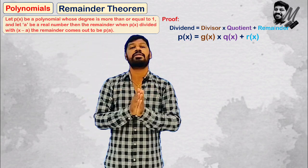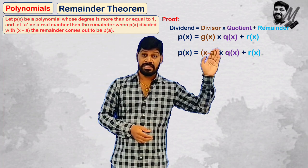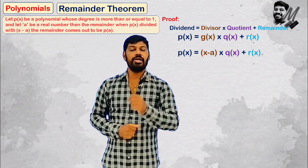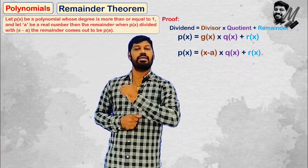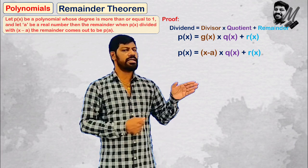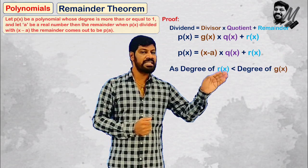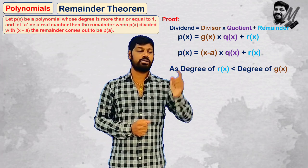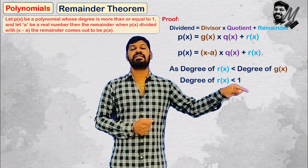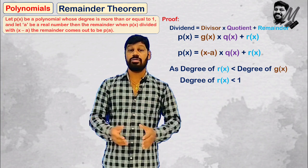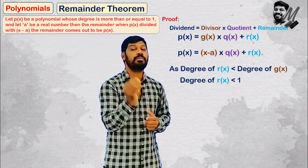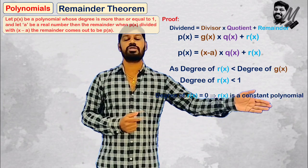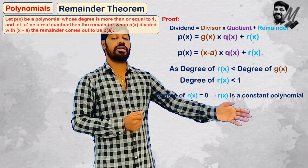P of x is equal to x minus a into Q of x plus R of x. Now, since the degree of R of x must be less than the degree of G of x, and G of x is a linear polynomial, the degree of R of x is less than 1. Less than 1 means degree 0 — that is a constant polynomial. Therefore, the degree of R of x is equal to 0, so R of x is going to be a constant polynomial.